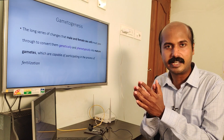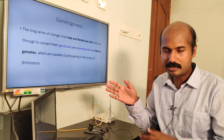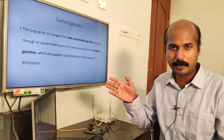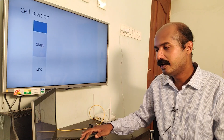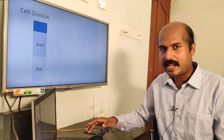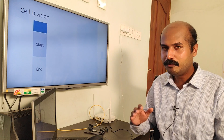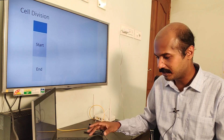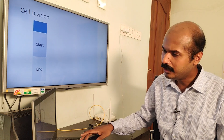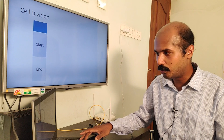These gametes are genetically and phenotypically different from the parent germ cells, and that enables them to perform in the process of fertilization, resulting in a zygote — from where our study of proper embryology begins. To understand gametogenesis, and especially the genetic aspect, we need to look at cell division. There are two types of cell division.